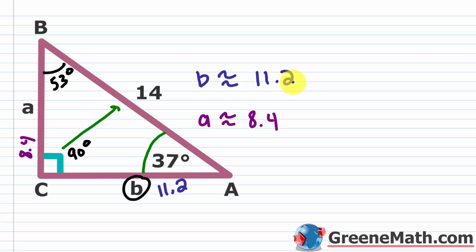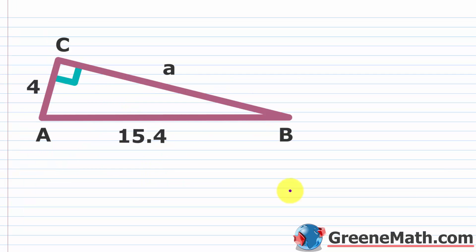So we've solved this triangle. The two unknown sides are approximately 8.4 and 11.2. The given values were: the hypotenuse of 14, angle A of 37 degrees, right angle C of 90 degrees, and the computed angle B of 53 degrees. Now let's look at a different type of problem.